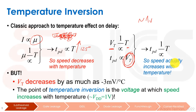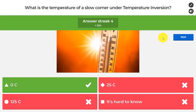Therefore, the slow corner shifts to zero degrees Celsius. In practice, since we operate close to the temperature inversion point, we typically check at both high and low temperature to be safe. Leakage, on the other hand, is always checked at high temperature because leakage is mainly dependent on VT, not mobility — so the high-leakage corner always corresponds to high temperature.